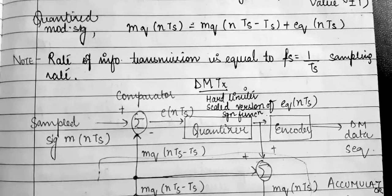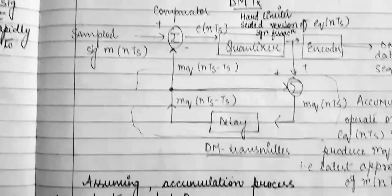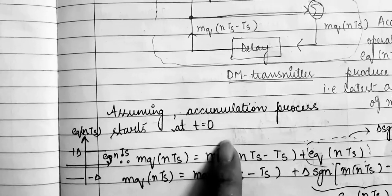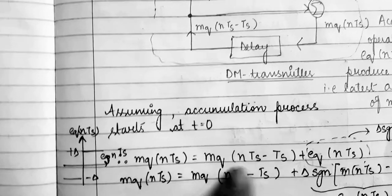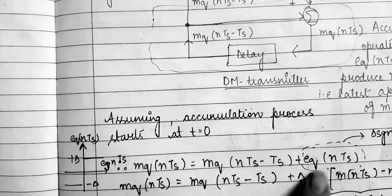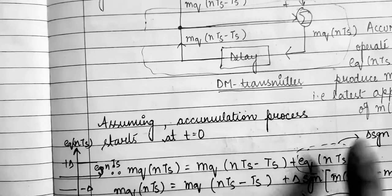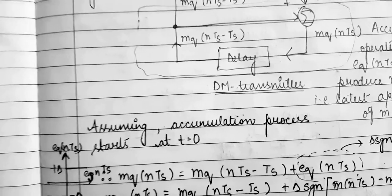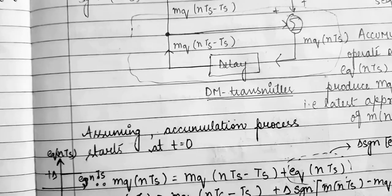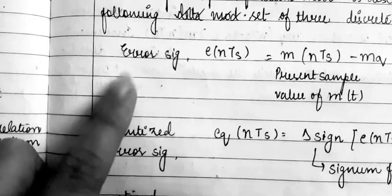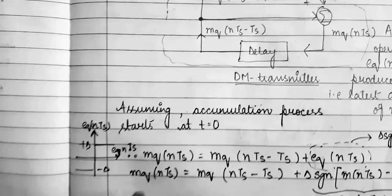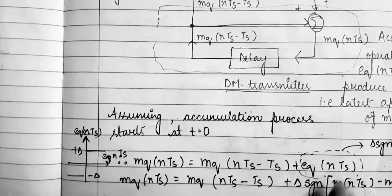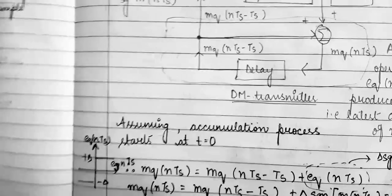We assume the accumulation process starts at t equals zero. Then mq(nTs) equals mq(nTs minus Ts) plus eq(nTs). Since eq(nTs) is delta times the signum function of e(nTs), substituting e(nTs) = m(nTs) minus mq(nTs minus Ts) from the error signal, we get: mq(nTs) = mq(nTs minus Ts) plus delta times signum of [m(nTs) minus mq(nTs minus Ts)].